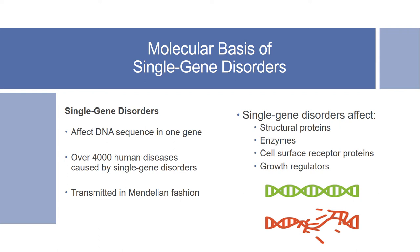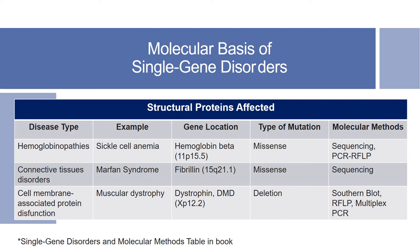Before discussing specific single gene disorders that follow Mendelian patterns, let's define them. Single gene disorders affect the DNA sequence in one gene and can affect structural proteins, enzymes, cell surface receptor proteins, or growth regulators. There is a table in the textbook that outlines single gene disorders of each type. The chart shown is an adaptation covering disorders that affect structural proteins, including hemoglobinopathies — for example, sickle cell anemia — along with gene location, mutation type, and molecular detection methods.